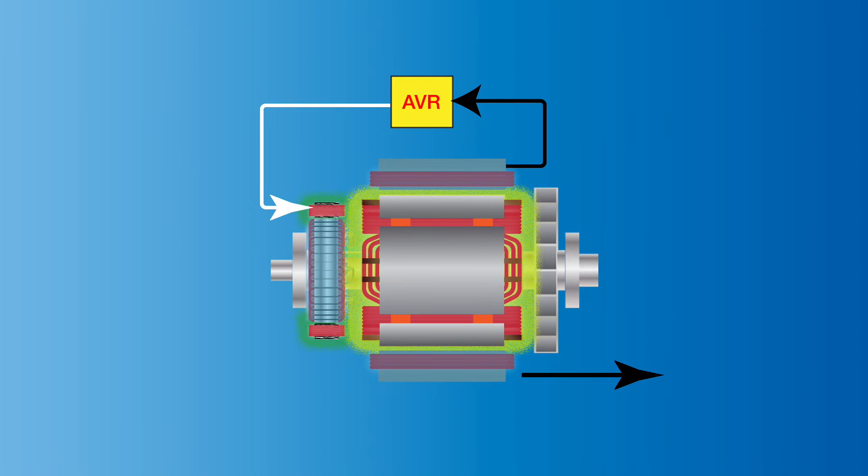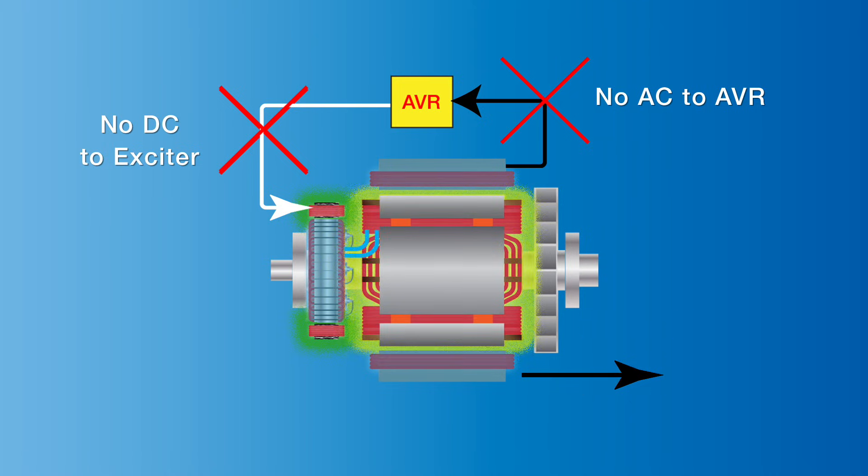However, once the AC reference feed from the stator to the AVR drops to a certain level due to a high percentage of motor starting load causing a severe drop in output voltage when the load is applied, the AVR doesn't receive enough AC input voltage to rectify and feed DC current to the exciter. As such, this causes a collapse in excitation with no DC input to the main rotor causing the rotating magnetic field to collapse and hence no AC power from the generator.